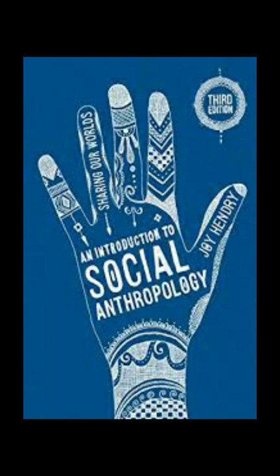Functionalist theory holds that social stratification benefits the whole society because it motivates people to undertake all the jobs necessary for the society to survive. Conflict theory emphasizes the conflicts that occur within stratified societies as different social strata with opposing interests clash with one another over goals and resources.